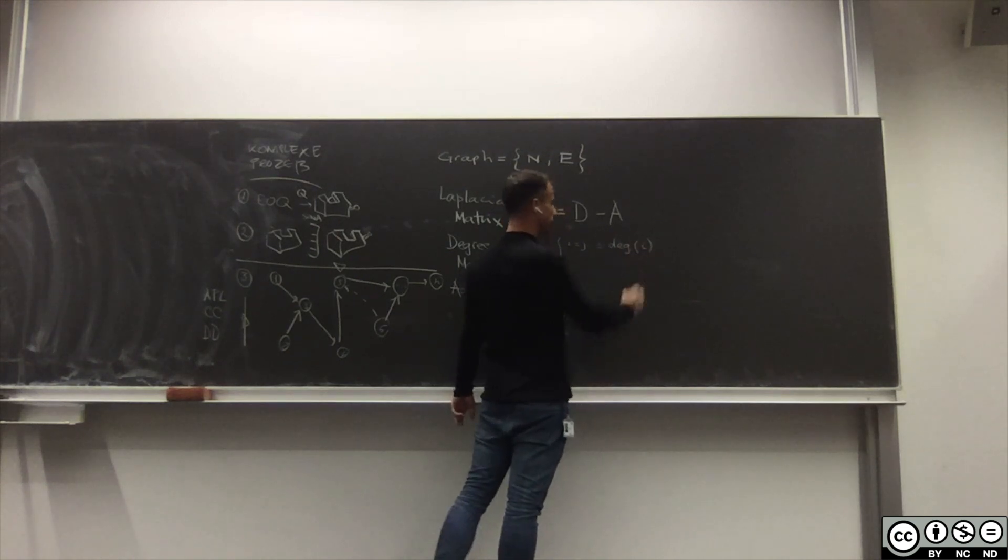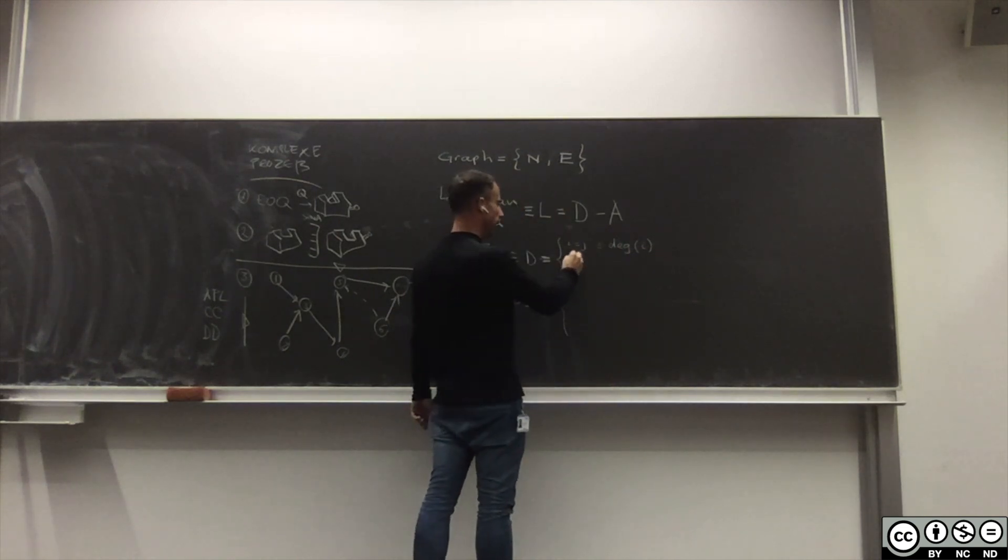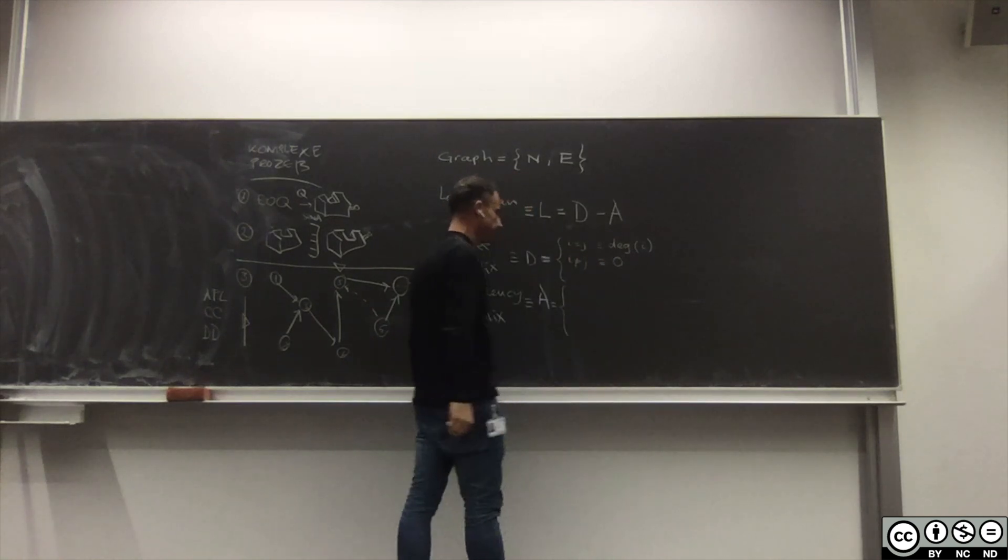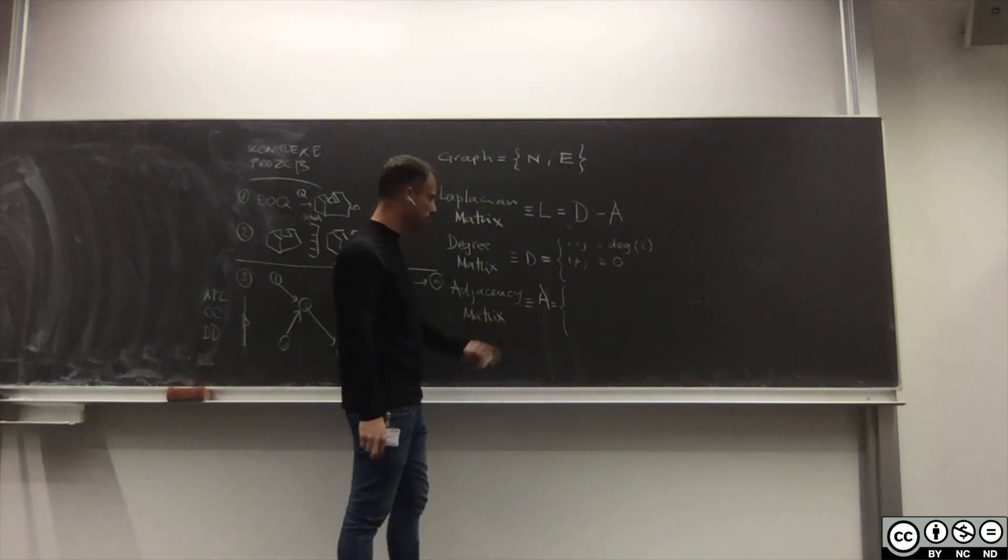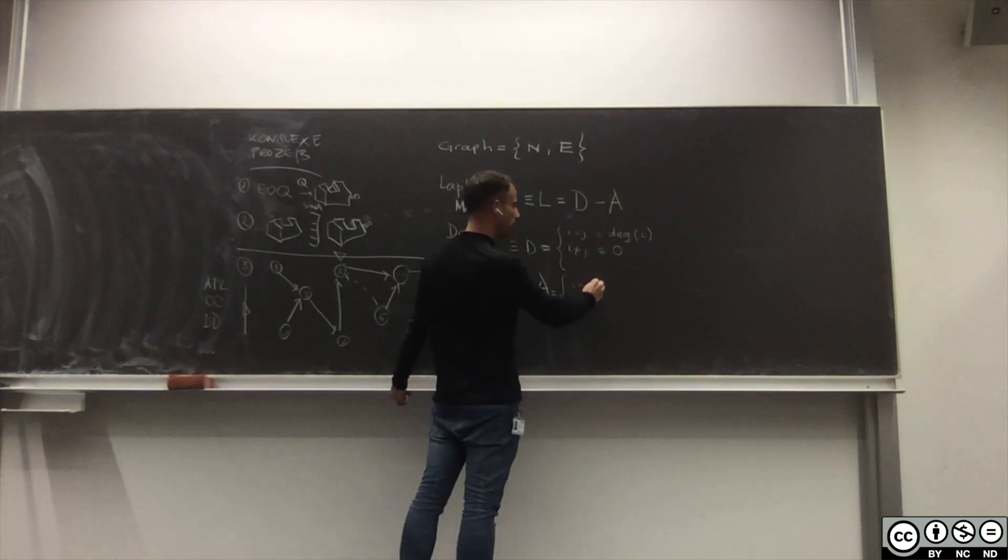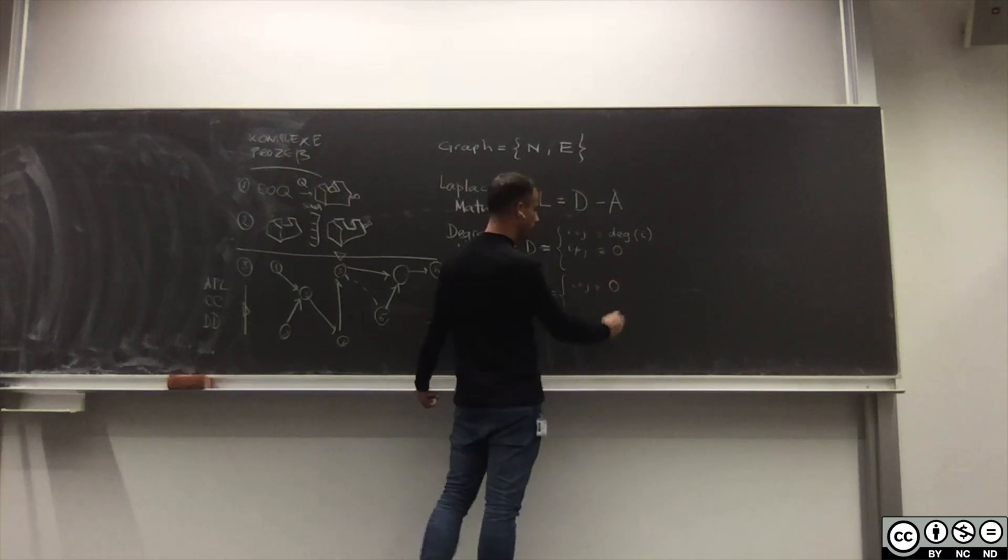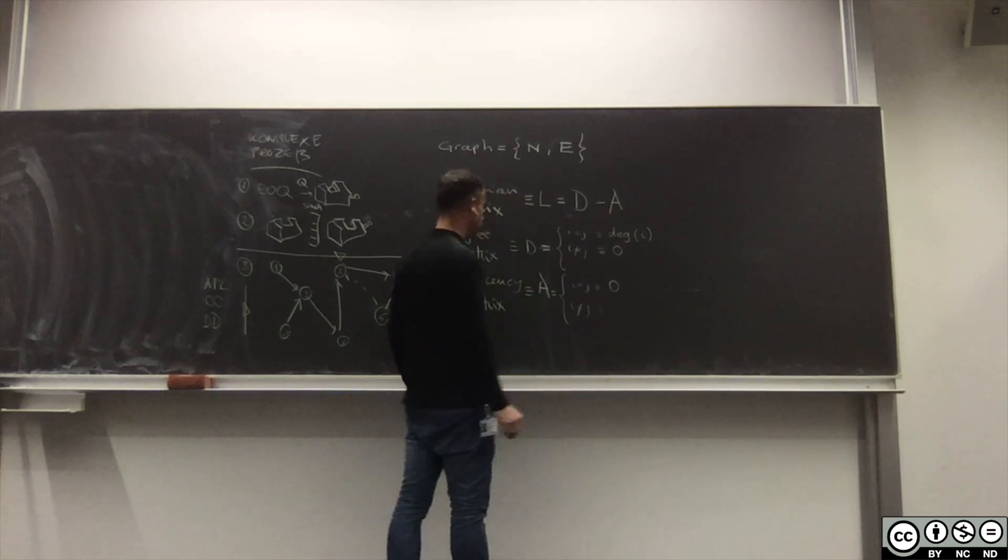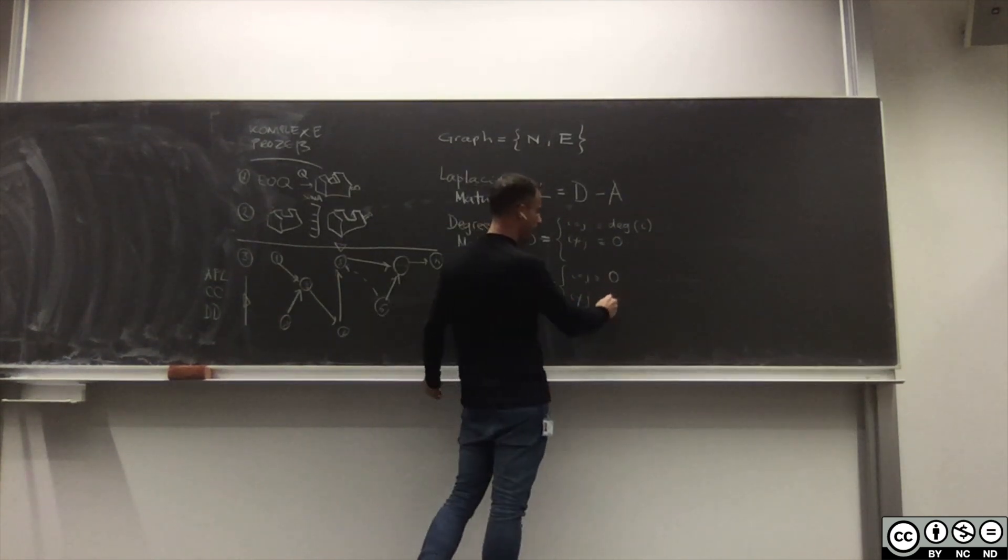Wenn I ungleich J das ist gleich Null. Und bei Adjacency Matrix wenn I gleich J dann ist Null und wenn I ungleich J habe ich hier die Anzahl Nachbarn.